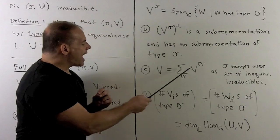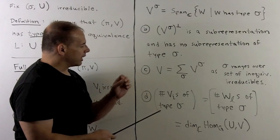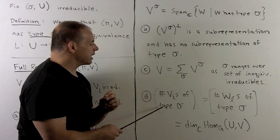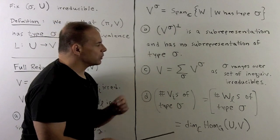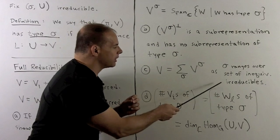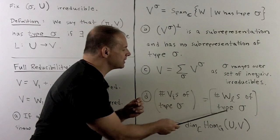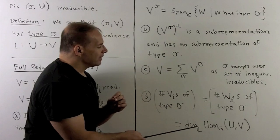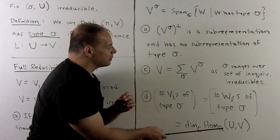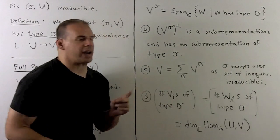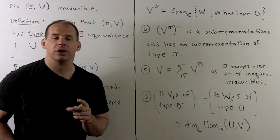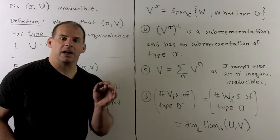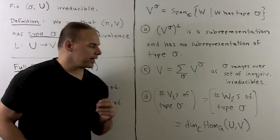The number of V sub i's of type sigma equals the number of W sub l's of type sigma, which equals the dimension of the space of intertwining operators from sigma to pi.